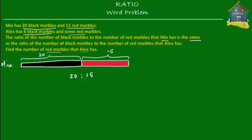The ratio is 20 to 15, which means that for the 20 black marbles that Mia has, she has got 15 red marbles. But is there a way to simplify this? If we divide both of these terms by 5 — 20 divided by 5 is 4, and 15 divided by 5 is 3 — then we get a new ratio: 4 to 3. This means that for every 4 black marbles that Mia has, she has 3 red marbles.